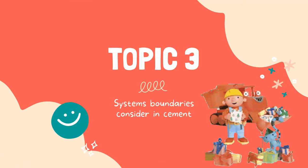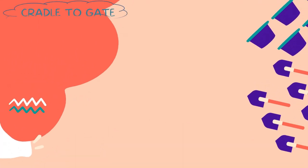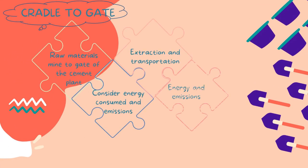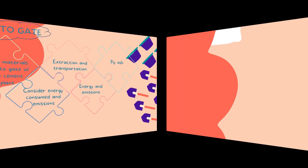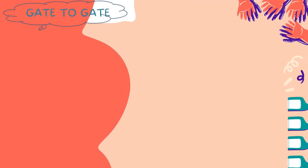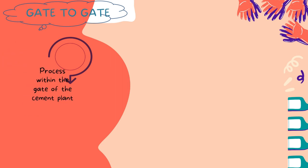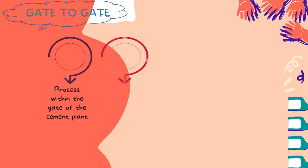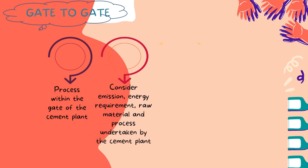Before this we saw the stages of cradle-to-gate and gate-to-gate. Let's now look more deeply at the system boundaries considered in cement. In cradle-to-gate, it is the process from raw materials being mined to the gate of the cement plant. This process considers energy consumed and emissions because it involves extraction and transportation of raw materials from the site to the factory. The energy and emissions that occur include burning of coal and carbon dioxide that produce fly ash. Next is gate-to-gate, which is the process within the gate of the cement plant. The things we need to consider are emissions, energy requirements, raw materials, and processes undertaken by the cement plant. It also involves extraction and transportation that can produce direct emissions.